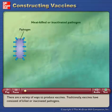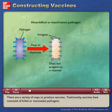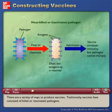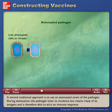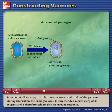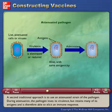There are a variety of ways to produce vaccines. Traditionally, vaccines have consisted of killed or inactivated pathogens. A second traditional approach is to use an attenuated strain of the pathogen. During attenuation, the pathogen loses its virulence but retains many of its antigens and is therefore able to elicit an immune response.